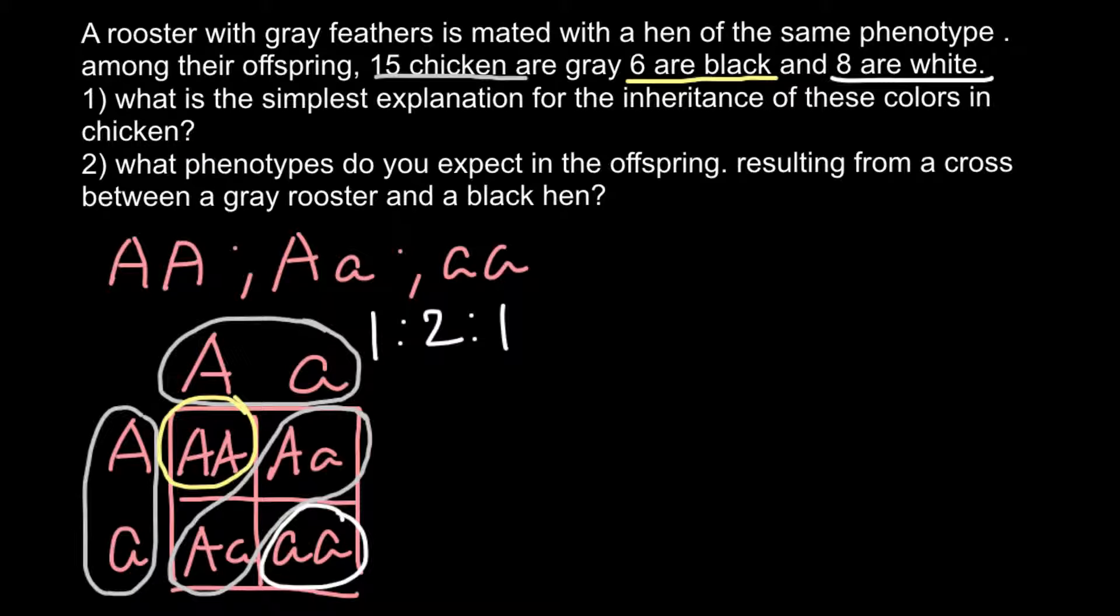And question two: What phenotypes do you expect in the offspring resulting from a cross between a gray rooster and black hen? By the way, according to this problem, it doesn't matter which color the rooster is. For example, the rooster can be black and the hen can be gray. When we change colors, it doesn't affect the sex of the rooster and hen, and doesn't affect ratios in the following generation.